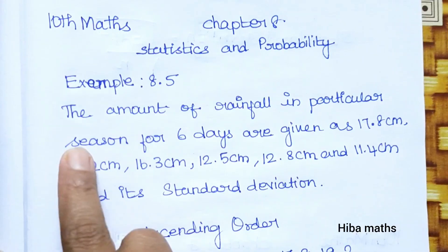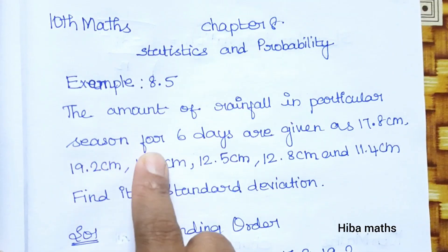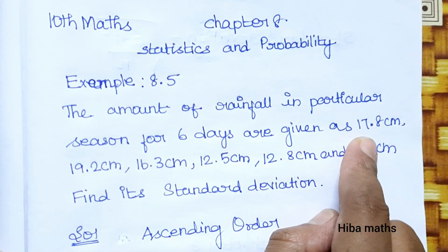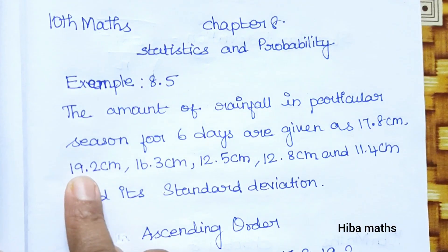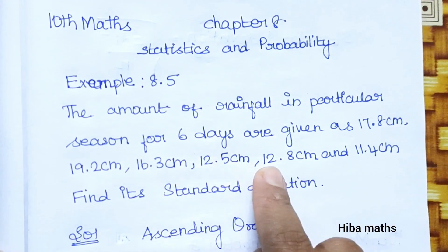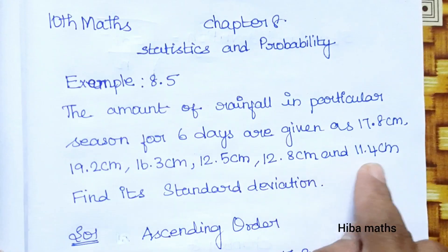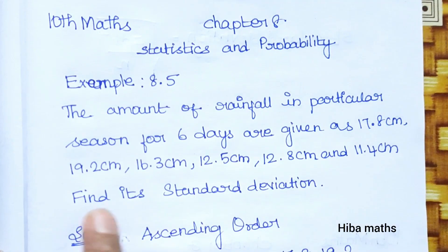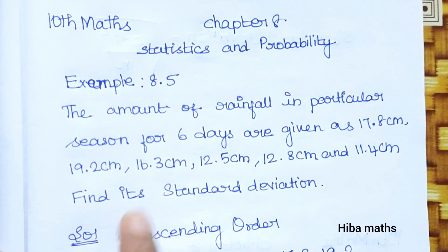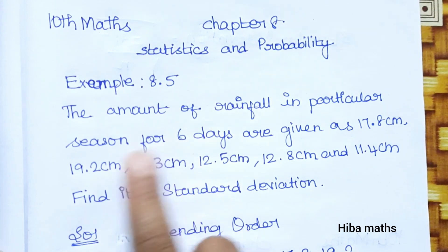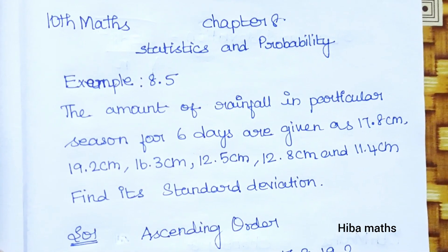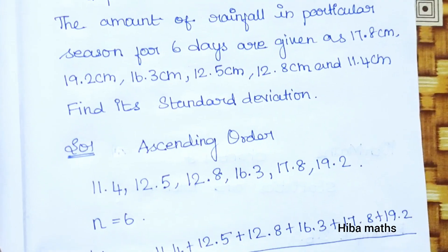The amount of rainfall in a particular season for 6 days are given as: 17.8 cm, 19.2, 16.3, 12.5, 12.8, and 11.4 cm. Find its standard deviation. So 6 observations are given and we need to find the standard deviation.